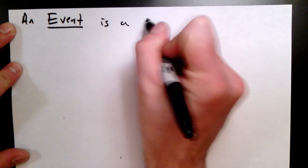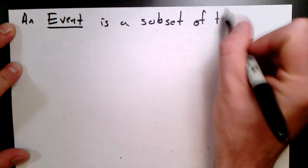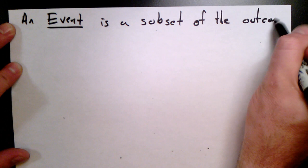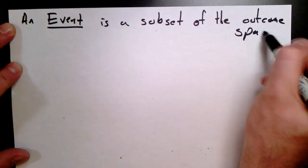So, an event is simply a subset, a collection of elements from an outcome space, a subset of an outcome space.